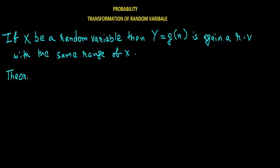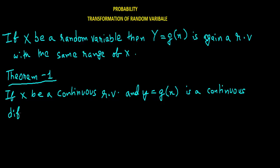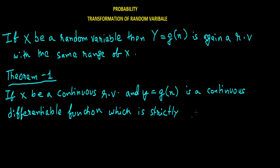Now there are two theorems — or two ways to do transformation. Theorem 1: if x is a continuous random variable and Y equals G of x is a continuous differentiable function which is strictly monotonic, then the PDF of Y can be found by the following formula.